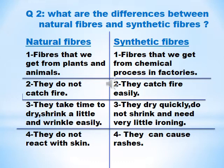Natural fibers are obtained from plants and animals, whereas synthetic fibers are obtained through a chemical process in factories. Number two: natural fibers catch fire easily, while synthetic fibers do not catch fire. Number three: natural fibers take time to dry, shrink a little, and wrinkle easily, whereas synthetic fibers dry quickly, do not shrink, and need very little ironing.